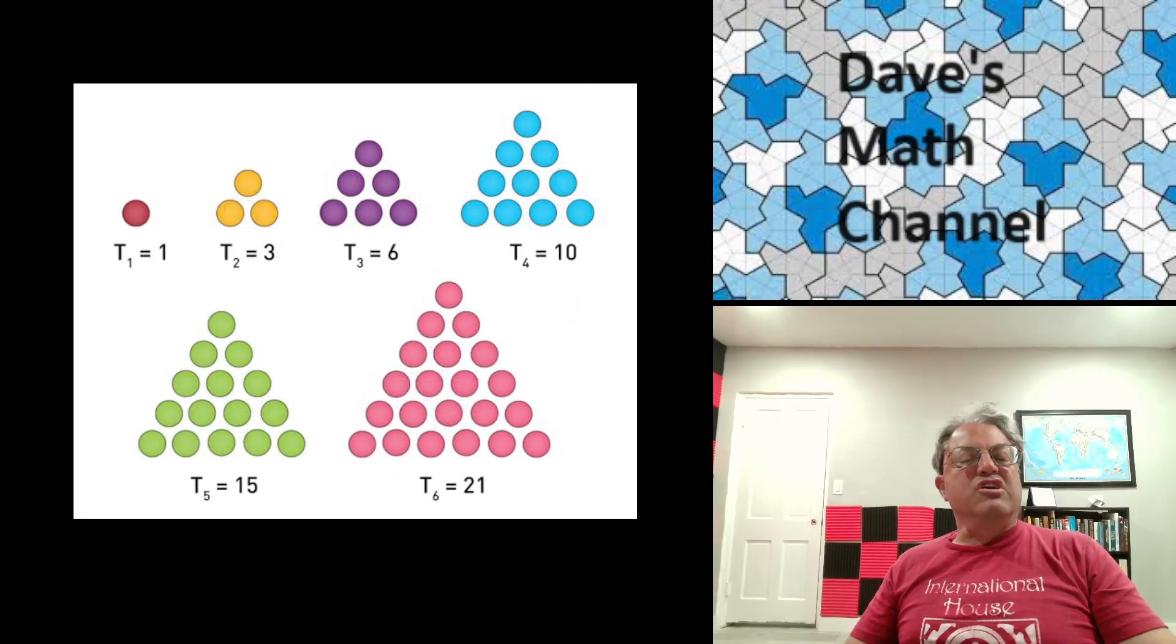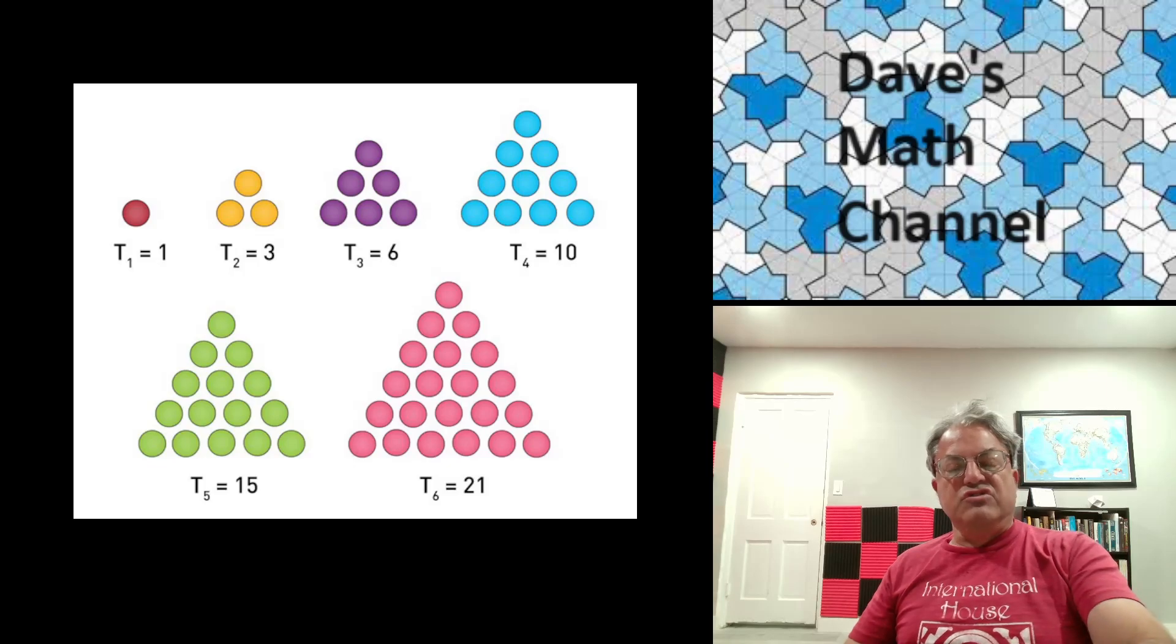These are the first six triangular numbers. You can count them and see how many there are. So for instance, the last one, t6, that's just the number of objects you can arrange in a triangle array of length 6. That's equal to 21.